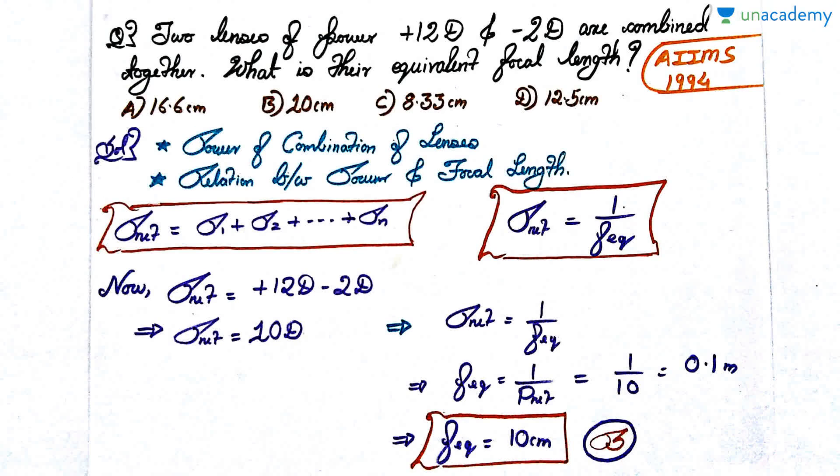Now let's move on to a question that requires power of lenses. This was also asked in AIIMS 1994. The question goes as follows: Two lenses of power +12 diopters and -2 diopters are combined together. What is their equivalent focal length? The options are 16.6 cm, 10 cm, 8.33 cm, and 12.5 cm. As usual, pause the video, attempt the question, and then we will discuss the solution.